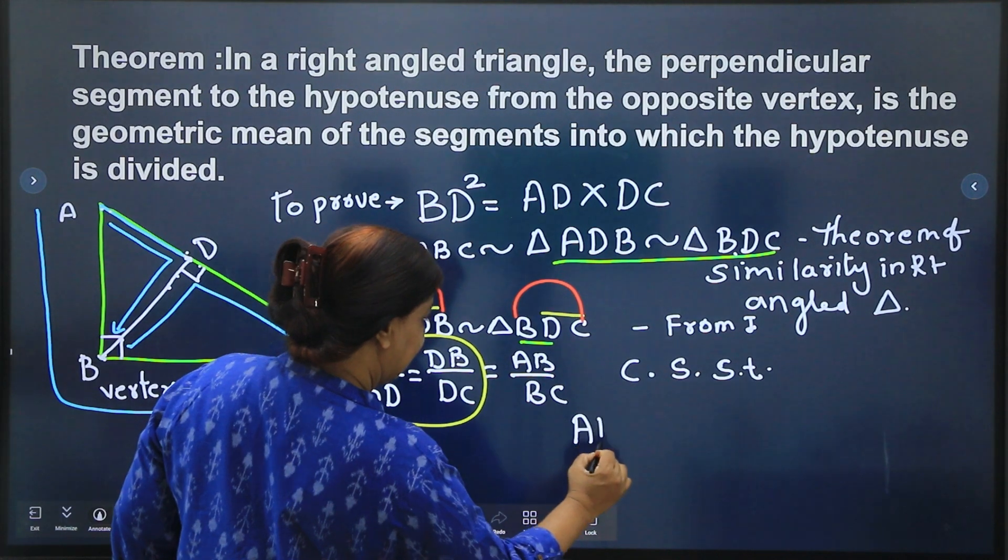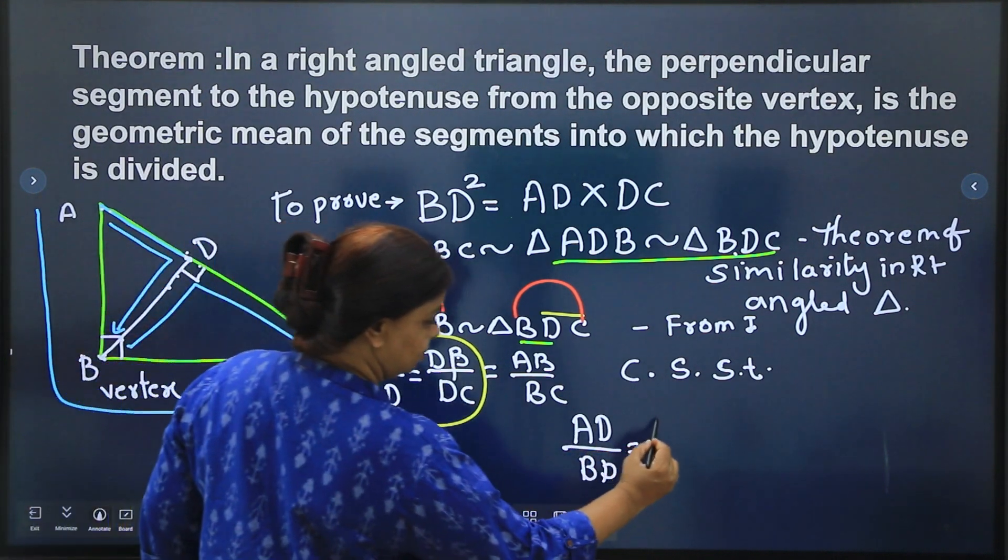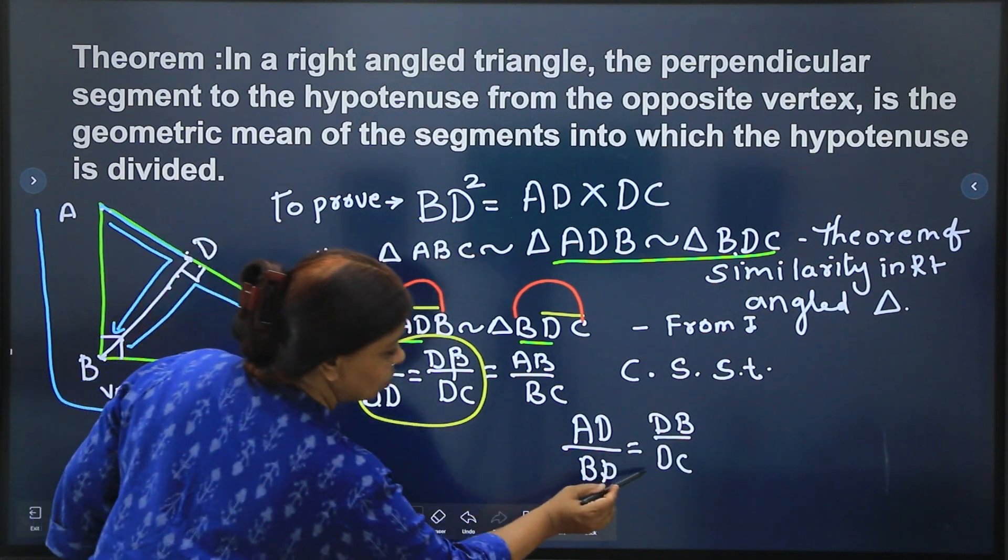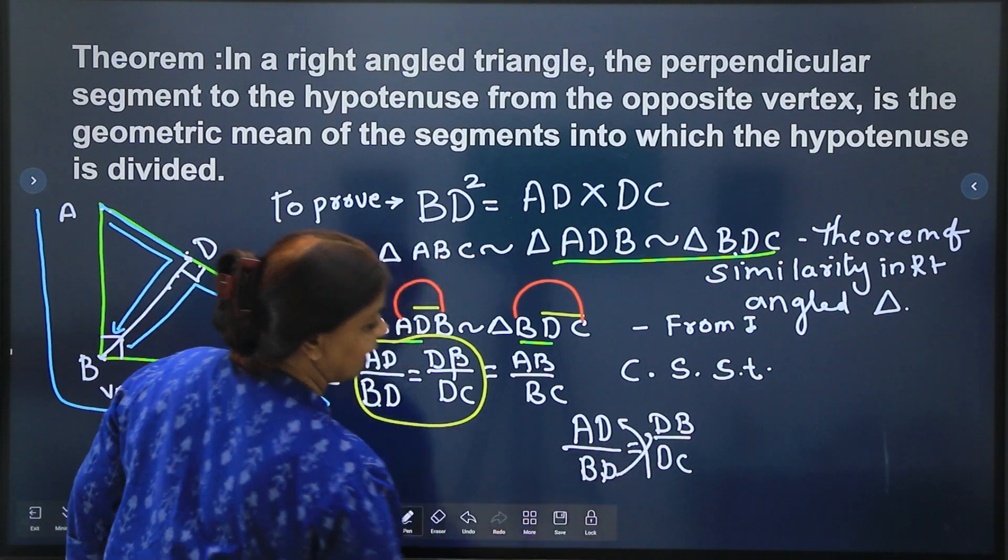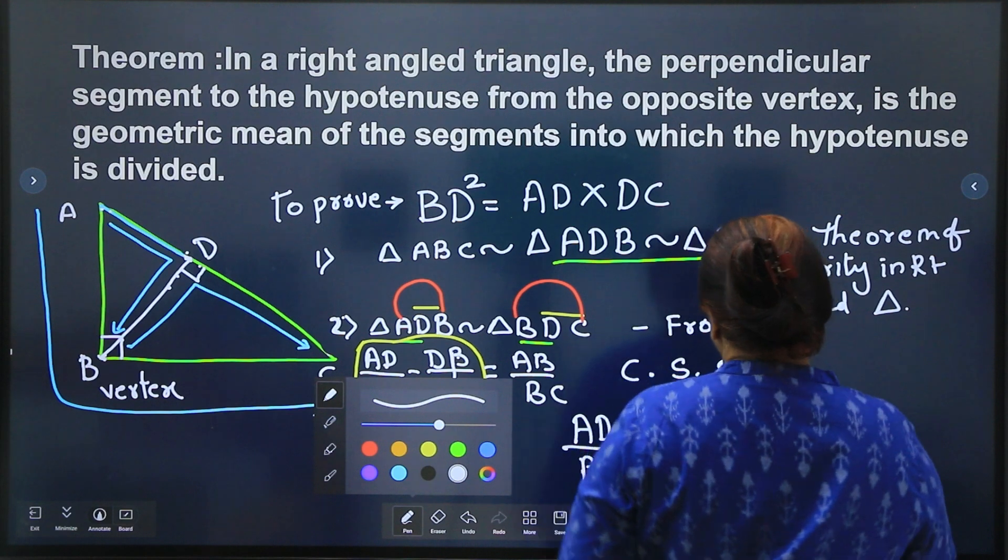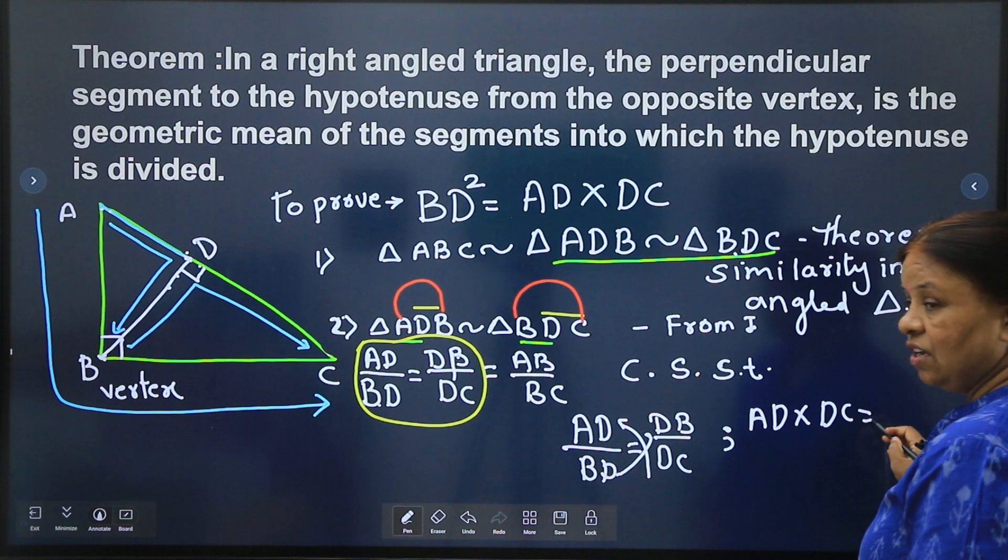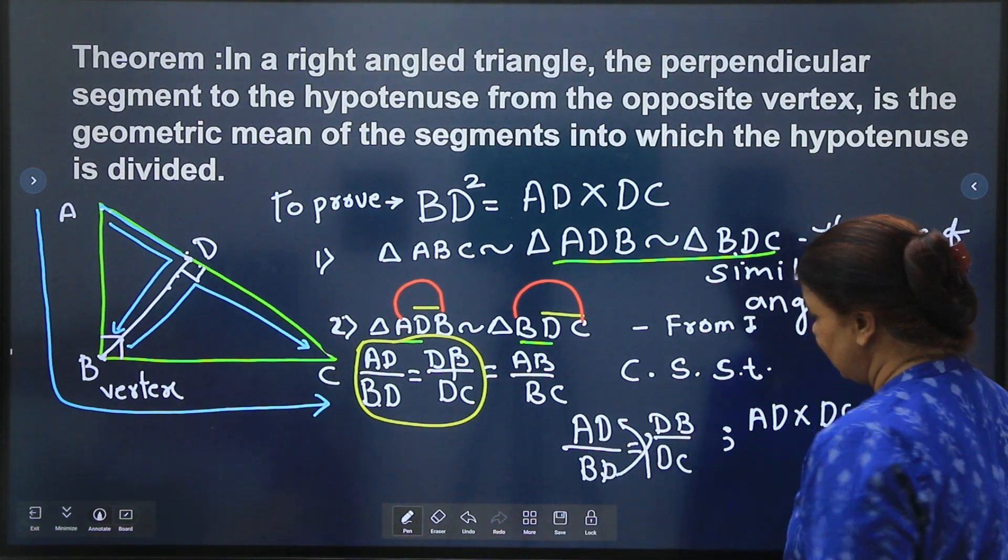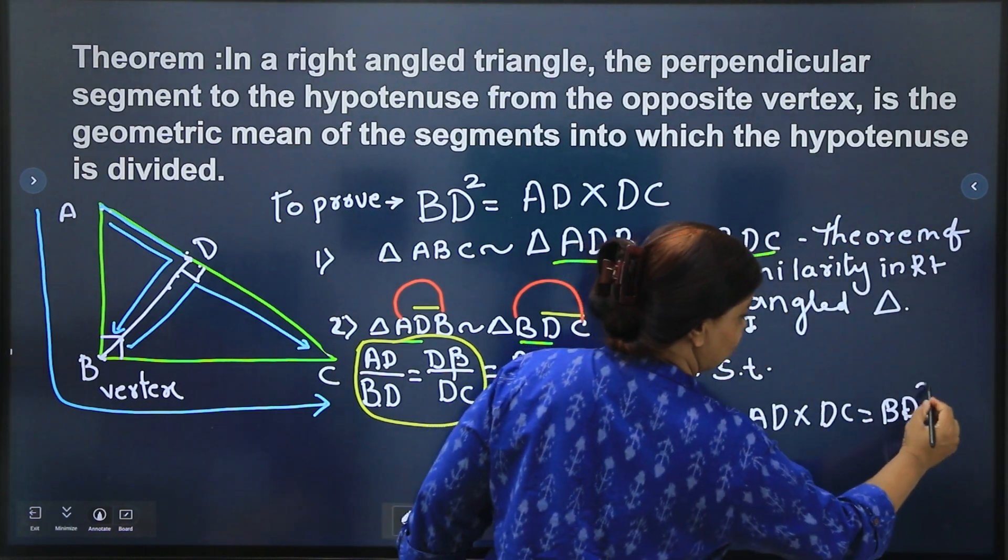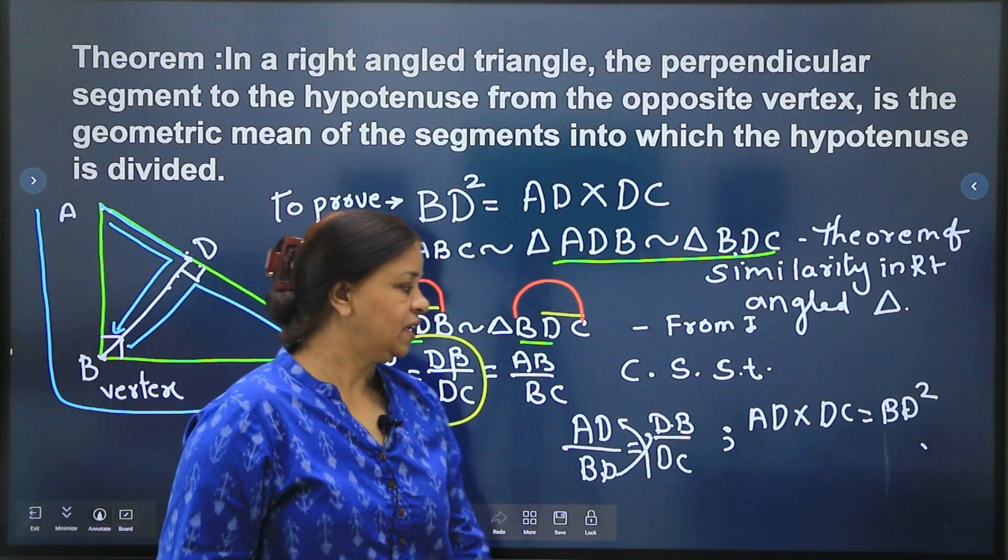What I will get? AD upon BD is equal to DB upon DC. If I cross multiply them, what I will get? AD into DC, children, AD into DC is equal to BD into BD, which is BD square. AD into DC, BD and DB is nothing but BD only, so BD into BD is BD square, hence proved.